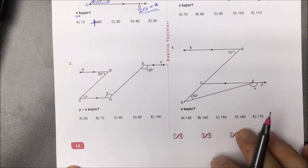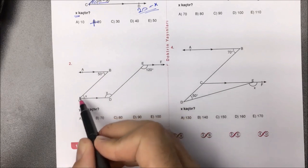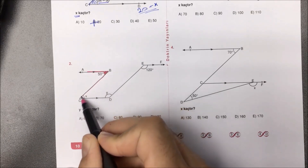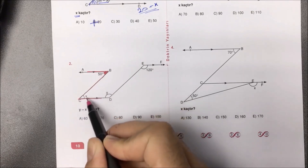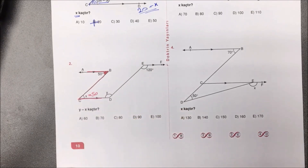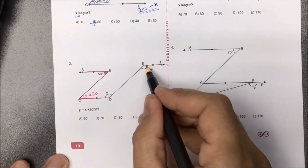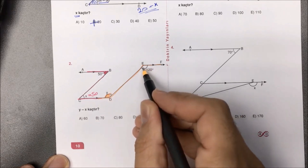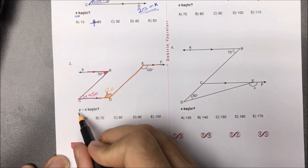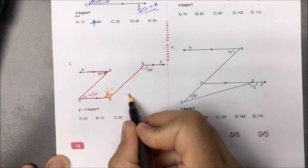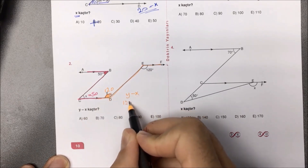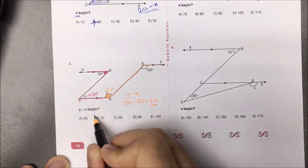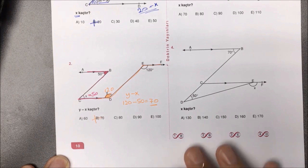İkinci örneğimize bakacak olursak Y eksi X bize sorulmuş. Z kuralını hemen gördünüz. Burası 50 ise Z harfini çizdiğimizde X'in de 50 olduğunu görürüz. Benzer şekilde ters Z kuralı gereği burası 120 ise Y de 120 gelecek. Bizden Y eksi X'i istemiş; Y dediğimiz 120, X dediğimiz 50; çıkartacak olursak aradığımız yanıt 70 olarak bulunmuş olur.